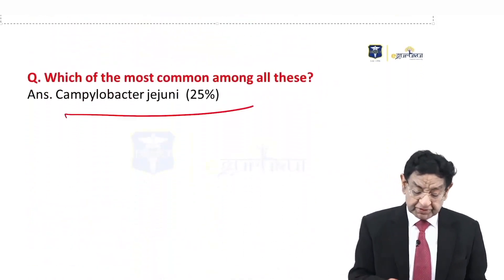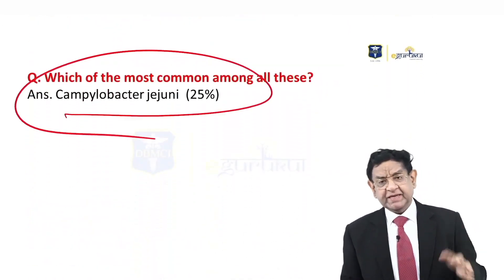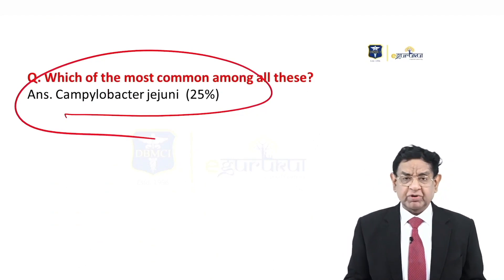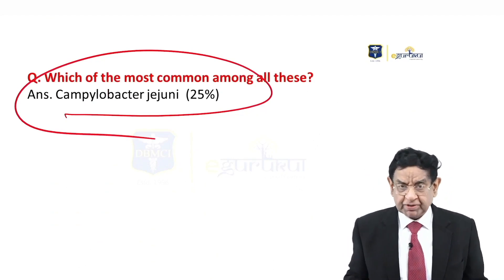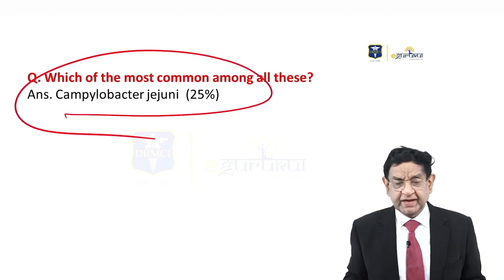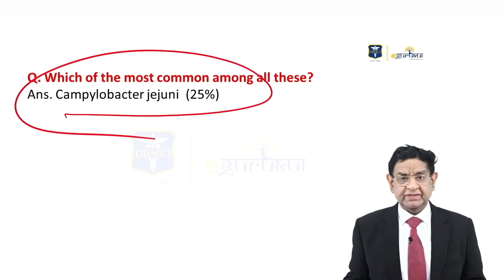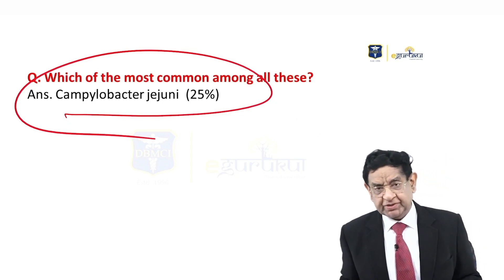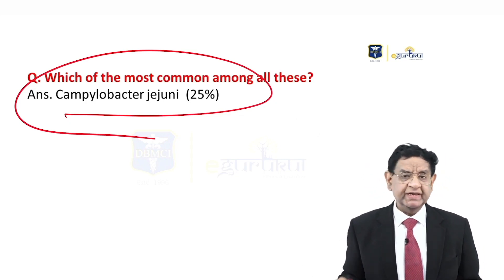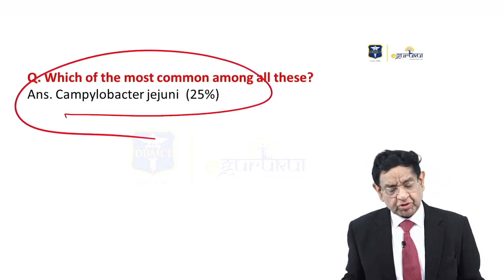The most common organism causing GBS is Campylobacter jejuni. In exams, they invariably talk about Campylobacter jejuni. Uncommonly, they may refer to other organisms, which is usually HIV — like in this question also, we talked about HIV.